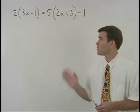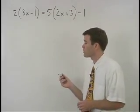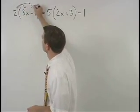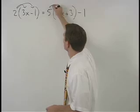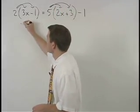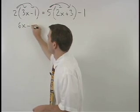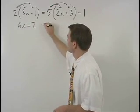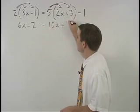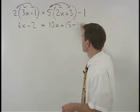In this equation, we start by distributing through the parenthesis on both sides. On the left, we get 6x minus 2, and on the right, we get 10x plus 15 minus 1.